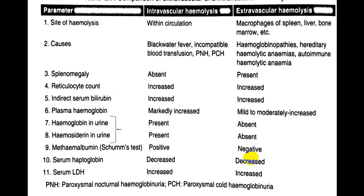The difference between intravascular and extravascular hemolysis: intravascular hemolysis occurs inside the vascular tree, while extravascular occurs in the reticuloendothelial system — spleen, liver, and bone marrow. The etiology of intravascular hemolysis commonly includes PNH, P. falciparum malaria (blackwater fever), or mismatched blood transfusion. Extravascular hemolysis is very common in hemoglobinopathies, hereditary hemolytic anemias, and autoimmune hemolytic anemias.